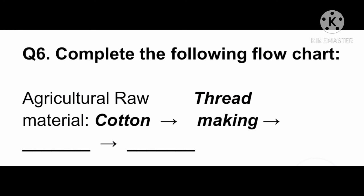Sixth question: Complete the following flow chart. There are two flow charts given to you from the same lesson, i.e., industries. This is one of them: agricultural raw material, i.e., cotton — from cotton, the thread-making process goes on, and after thread making, there are two empty columns given. You have to complete the chart starting from the raw material till the finished products. Options for these flow charts will be given to you during your exam.